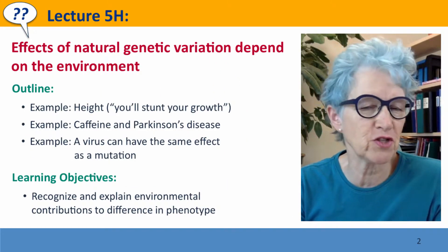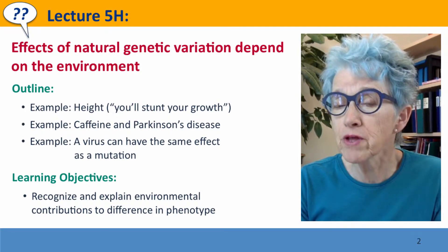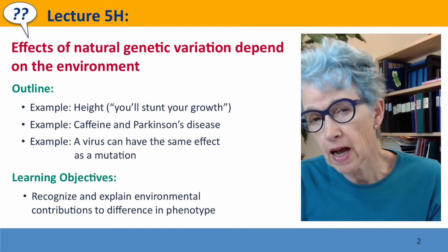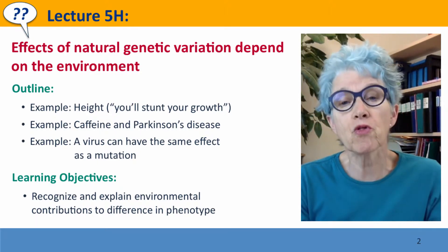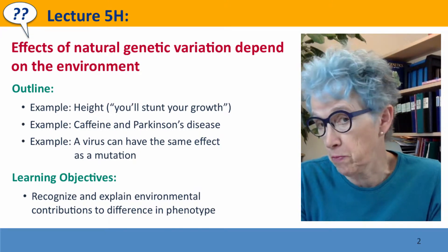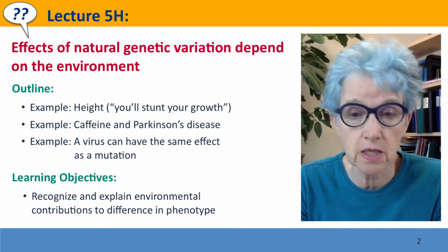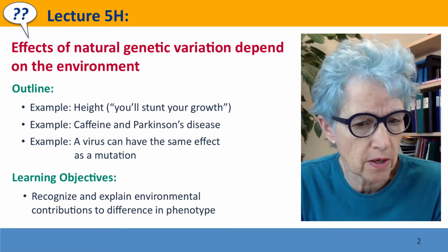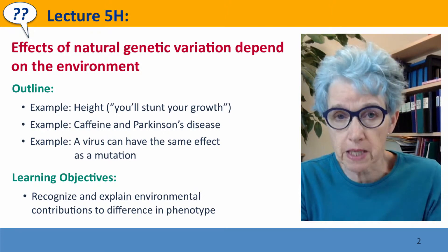Hi, everyone. Welcome back to Useful Genetics. This is lecture 5-H. We're going to think about how the environment contributes to phenotype, thereby confounding and sometimes masking the effects of natural genetic variation. We'll think about the effects of environment on height, the effects of caffeine on Parkinson's disease, how a virus can have the same effects as a mutation, and we'll integrate all of these into the concept of heritability.